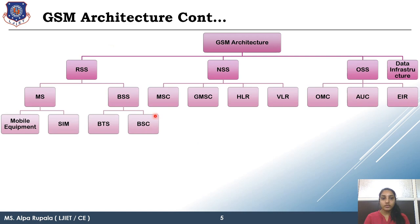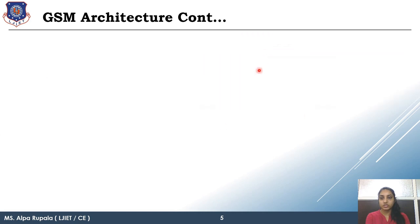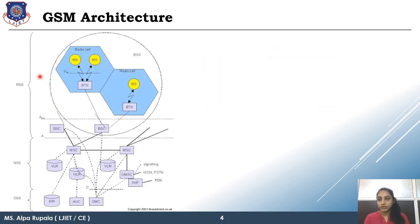We will see all the fundamentals in detail. Looking at the diagram: RSS is divided into MS and BSS; BSS is divided into BTS and BSC. In NSS you have MSC, GMSC, HLR, and VLR. OSS has OMC, AUC, and EIR.